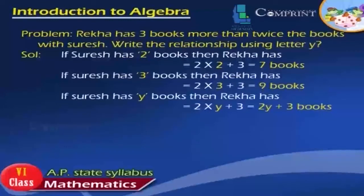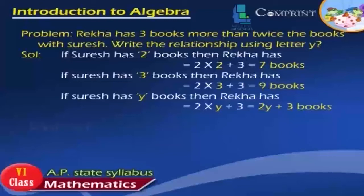Problem: Rekha has three books more than twice the books with Suresh. Write the relationship using the letter Y. Solution: If Suresh has 2 books, then Rekha has 2×2 + 3 = 7 books. If Suresh has 3 books, then Rekha has 2×3 + 3 = 9 books. If Suresh has Y books, then Rekha has 2×Y + 3, which equals 2Y + 3 books.